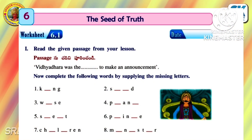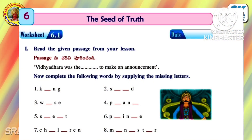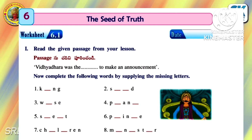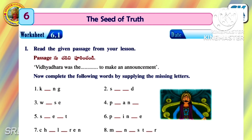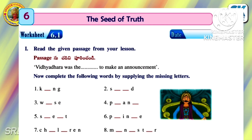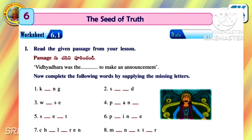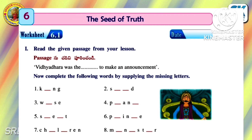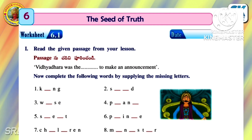Worksheet 6.1: Read the given passage from your lesson. Vidyadhara was the king who made an announcement. Now complete the following words by supplying the missing letters.